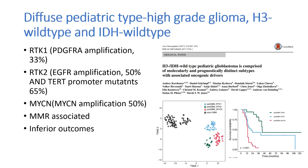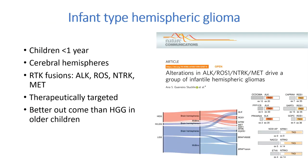Diffuse pediatric-type high-grade gliomas that are wild-type for IDH and histone genes have three distinct DNA methylation subtypes: RTK1, RTK2, and MYCN. The largest subtype MYCN has high frequency of MYCN amplification and the worst prognosis. The second largest subtype RTK1 shows enrichment for PDGFR-alpha amplification and has an intermediate prognosis. The smallest subtype RTK2, which has EGFR amplifications and TERT promoter mutation, has the best prognosis of all three. Infant-type hemispheric gliomas are seen in children less than 1 year and have receptor tyrosine kinase fusions in ALK, ROS1, NTRK and MET, similar to adenocarcinomas of the lung. As these fusions can be therapeutically targeted, they have a better outcome than high-grade gliomas in older children.